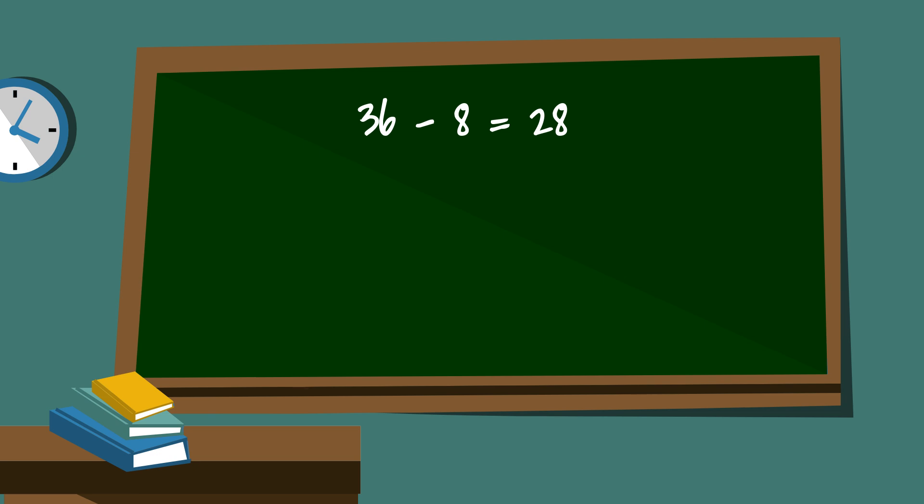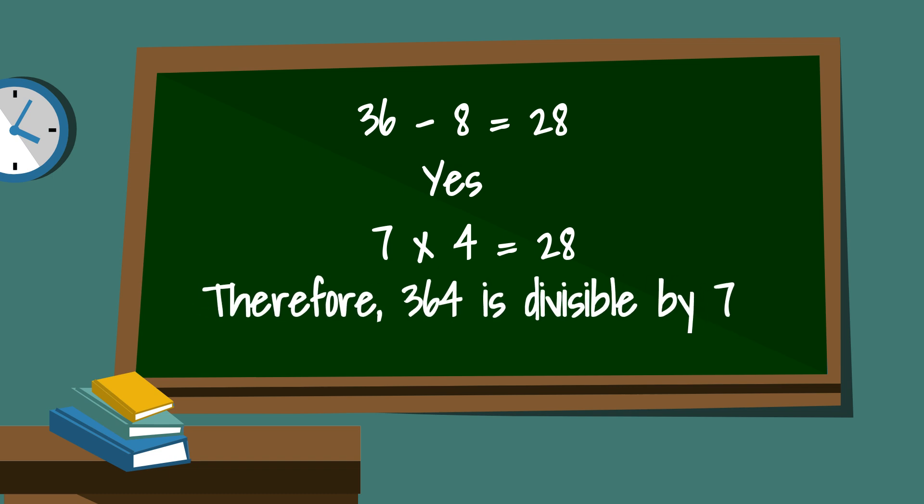Is 28 divisible by 7? Yes, so 364 the original number is divisible by 7. In fact 7 times 52 is 364.